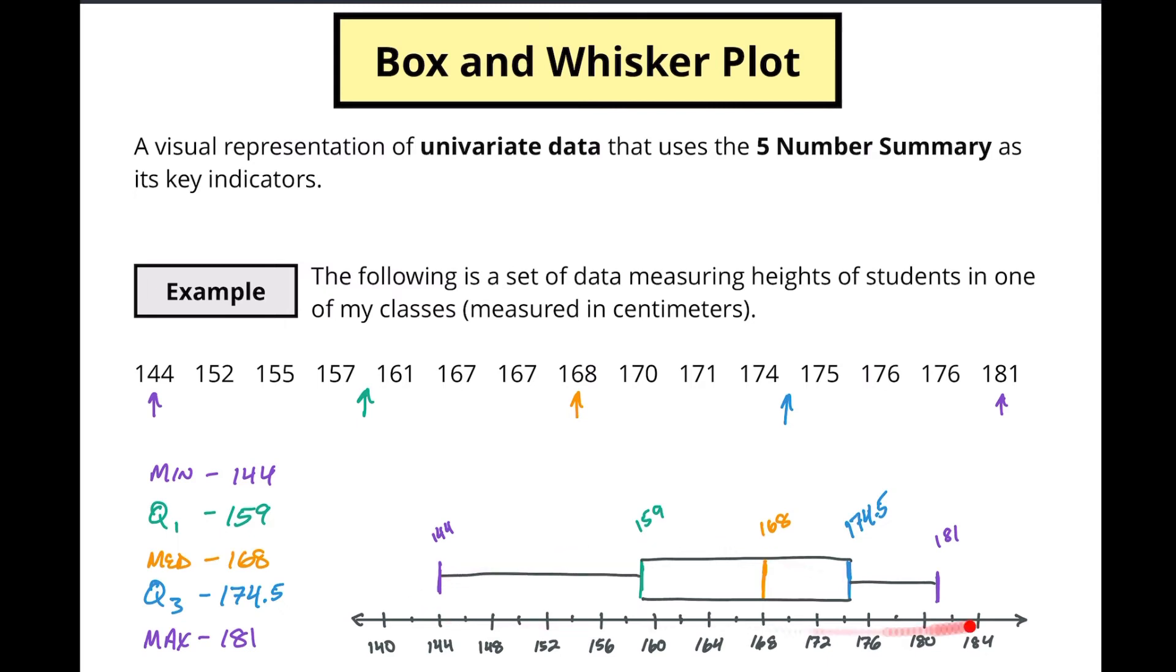This thing here is your box and whisker plot, your box and your whiskers. Now what this tells you about your data is it tells you how the values are distributed. We know that each chunk is 25 percent of our data so what this tells us is in the first quartile, in the first 25 percent of our data, we've got a spread going from 144 to 159.